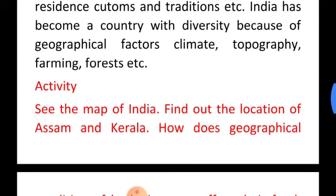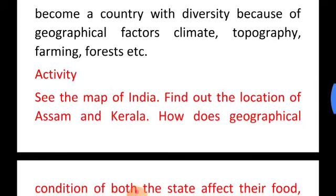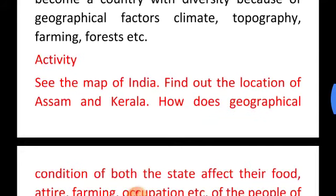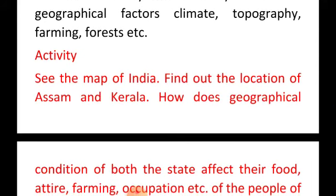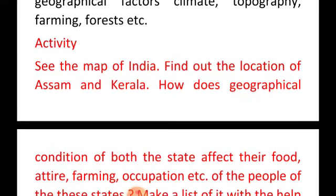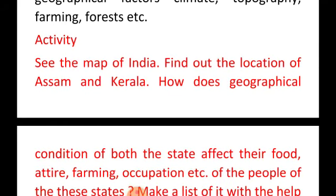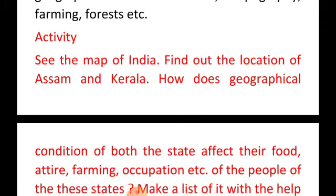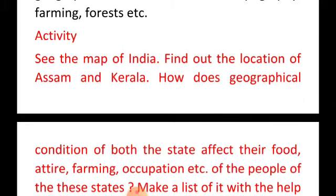We grow a variety of crops. Assam is known for its tea and Kashmir is known for saffron. We also have different forests depending on the climatic conditions. In mountainous regions, we have coniferous forest. In dry desert regions, we have thorny forest. In the delta region, we have marshy forest. The major part of India has deciduous forest, and in some sub-parts we have evergreen forest.